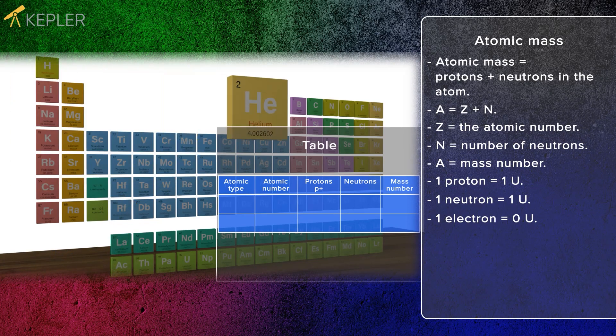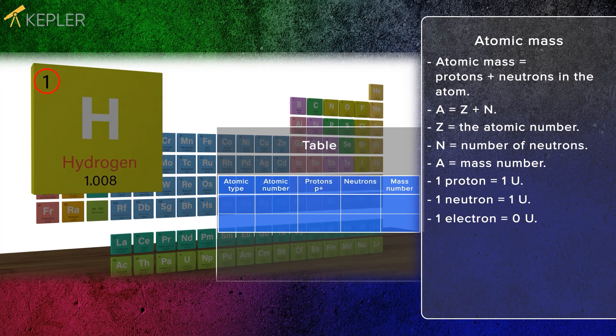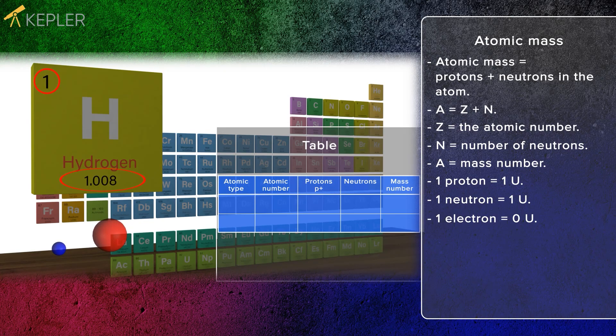The first substance in the periodic system is hydrogen. It has the atomic number 1. That means that it has one proton. You will find the atomic mass at the bottom of the elements box. For hydrogen, it is 1.008.